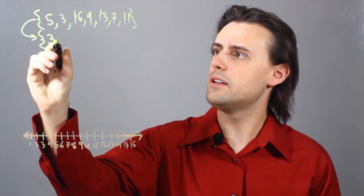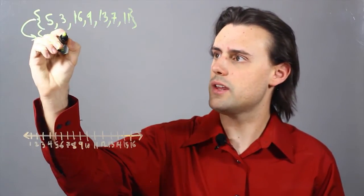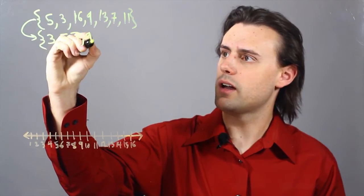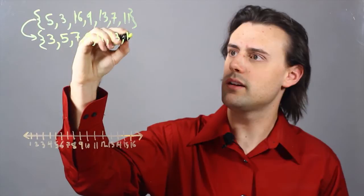So I identify 3 as the lowest number, so that comes first, and then I have 5, then 7, then 9, 11, 13, and finally 16.